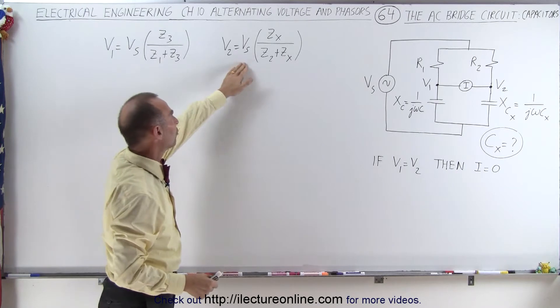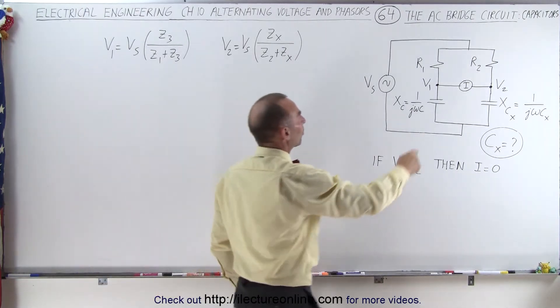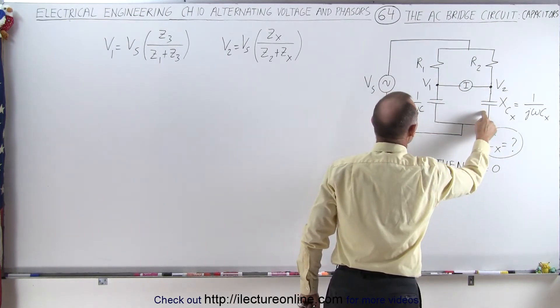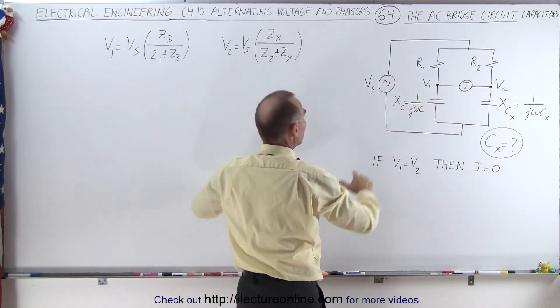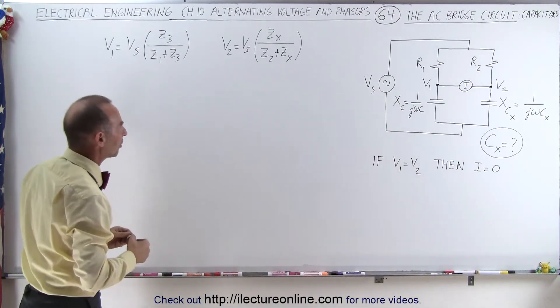These are the equations we used when we had the general impedance equations. Notice that this was Z1 and Z2, this was Z3, and this was the unknown Z sub x. So those were the equations we used initially when we had the general format of the bridge circuit.